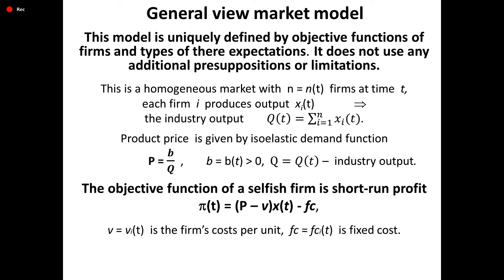General View Market Model. This model is uniquely defined by the objective functions of firms and the types of their expectations. It does not use any additional presuppositions or limitations. This is a homogeneous market with n(t) firms at time t. Each firm i produces output X_i(t), implying industry output Q(t) = sum from i=1 to n of X_i(t). Product price is given by the iso-elastic demand function: P = B/Q, where B = B(t) > 0 and Q = Q(t) is industry output.